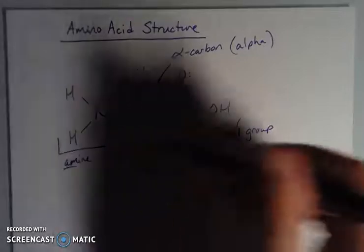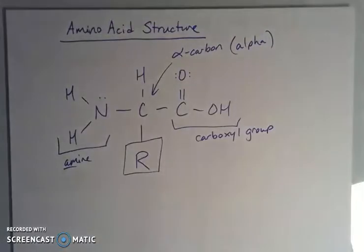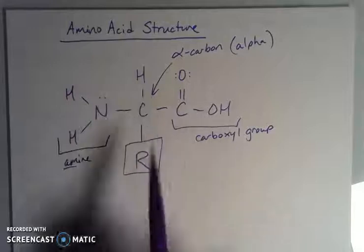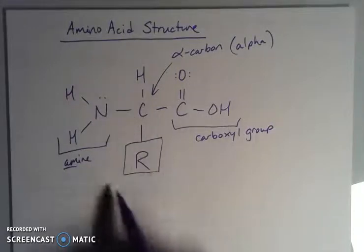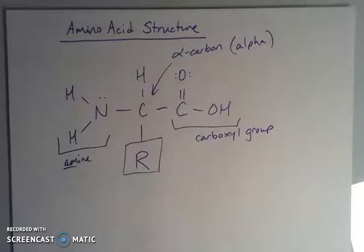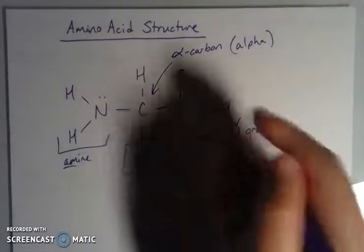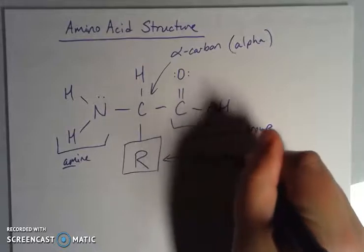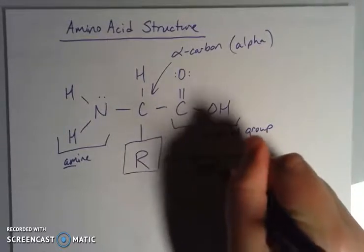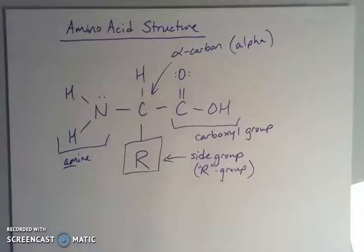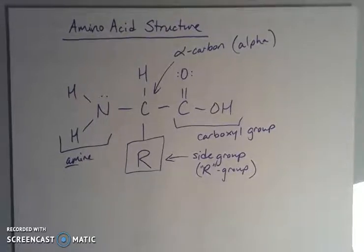Everything, all amino acids, all 20 of them have that same structure. The same three things around that central carbon, that alpha carbon. And then that R group is what makes it different. This R group is also called a side group. That side group can have different characteristics and we'll talk about how they impact the structure in the next series of videos.